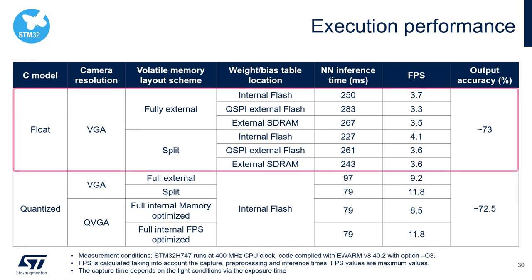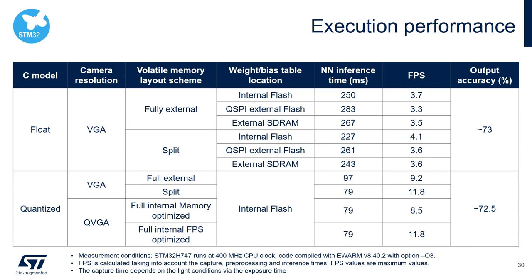First, for the float model, all configurations use VGA resolution and we have fully external and split schemes for the volatile memory. As a reminder, the fully external scheme places all buffers in the external SD RAM. The split scheme places the activation buffer and input buffer in the internal SRAM and the camera buffers in the external SD RAM.